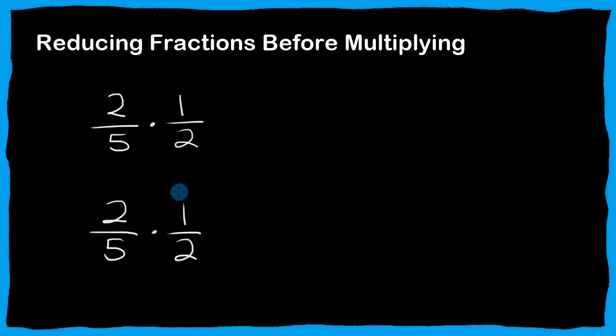Okay, today we're going to be talking about reducing fractions before multiplying, which is an incredibly handy trick any time you're having to deal with fractions, and especially any time you're having to reduce fractions. So here we're going to multiply two-fifths times one-half, and we'll do it both ways so I can show you the difference.